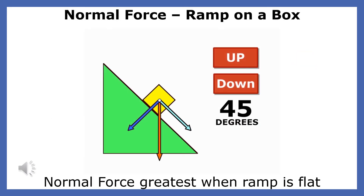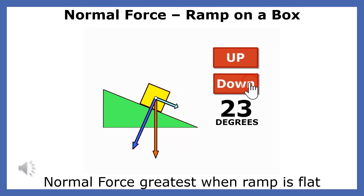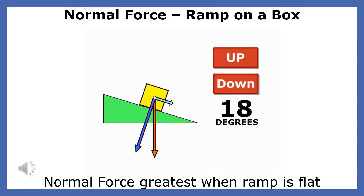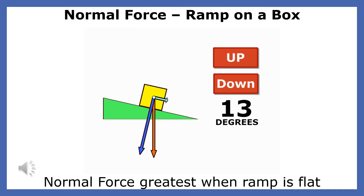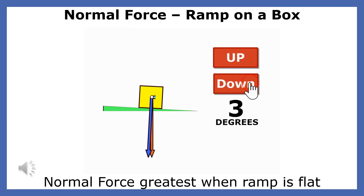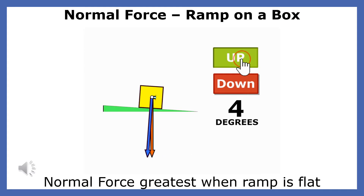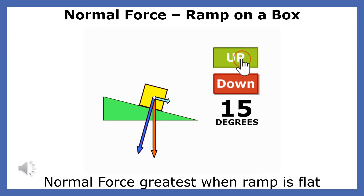The red force in this animation represents the weight force of the yellow box placed on the ramp. As you can see, part of the weight force causes the box to press on the ramp and part of the weight force is directed down the ramp. When a box is placed on a ramp, the box presses on the ramp with the same force that the ramp presses on the box.